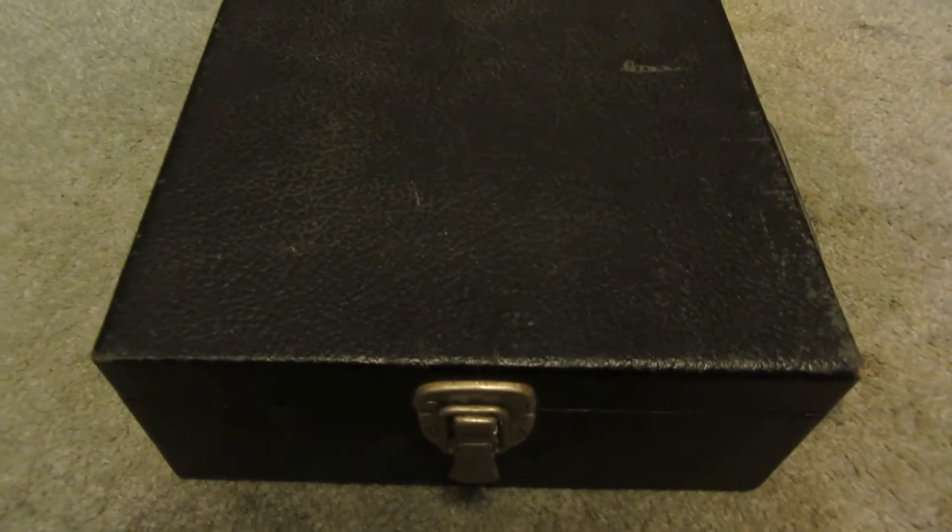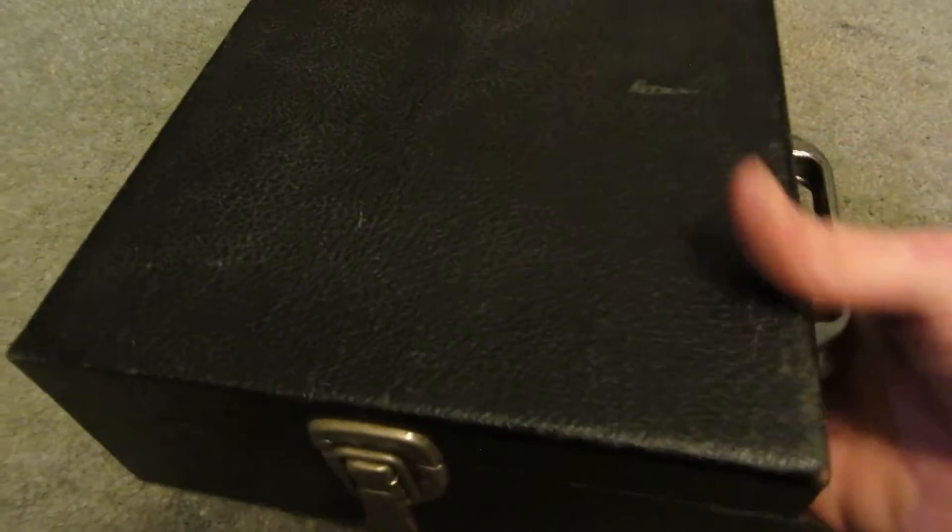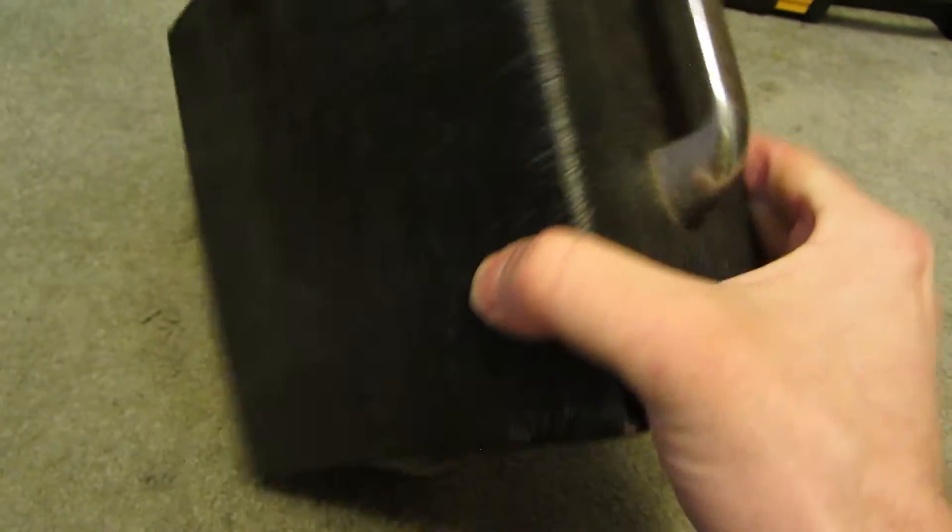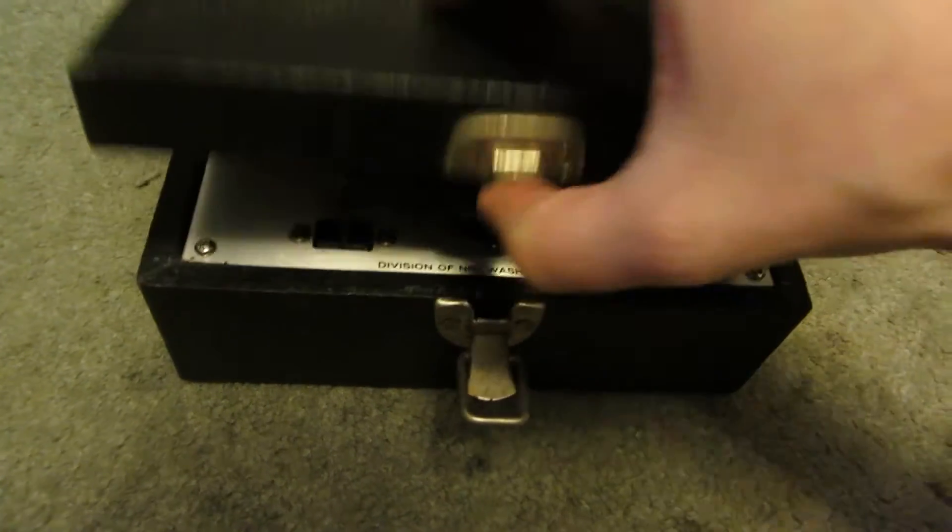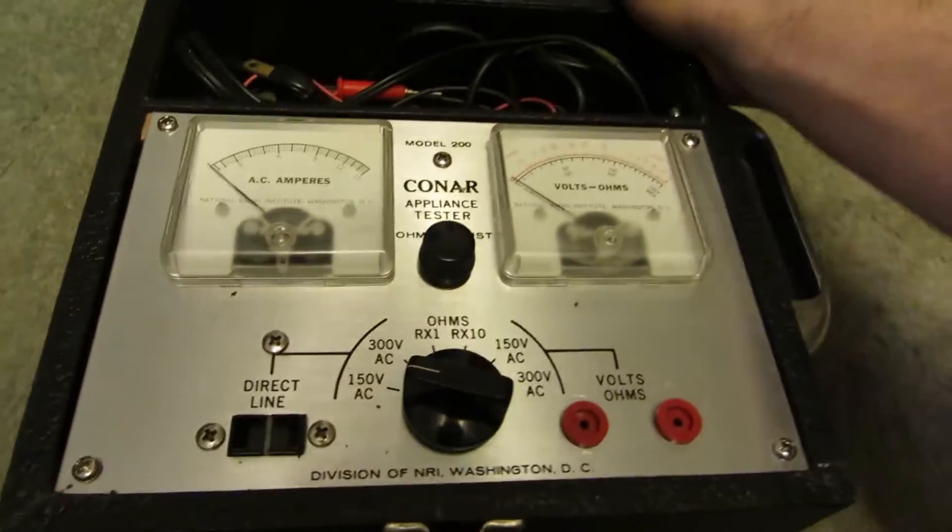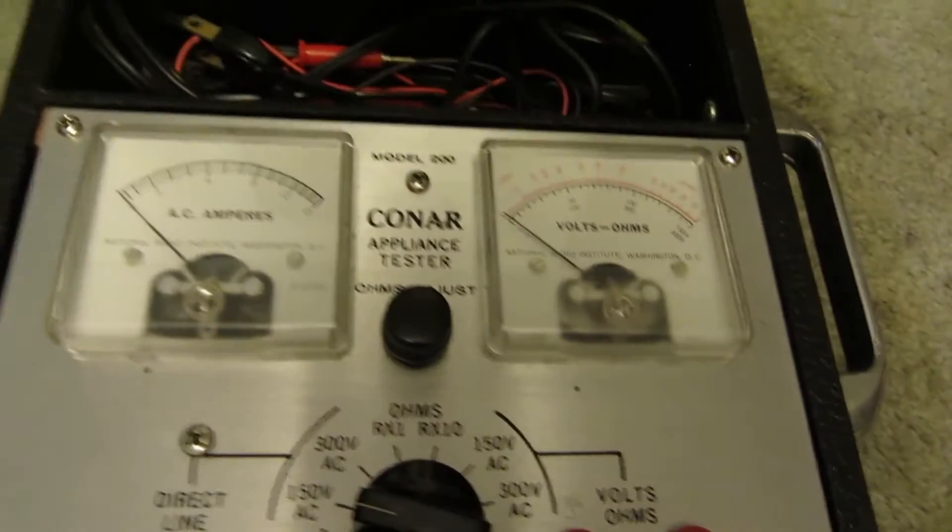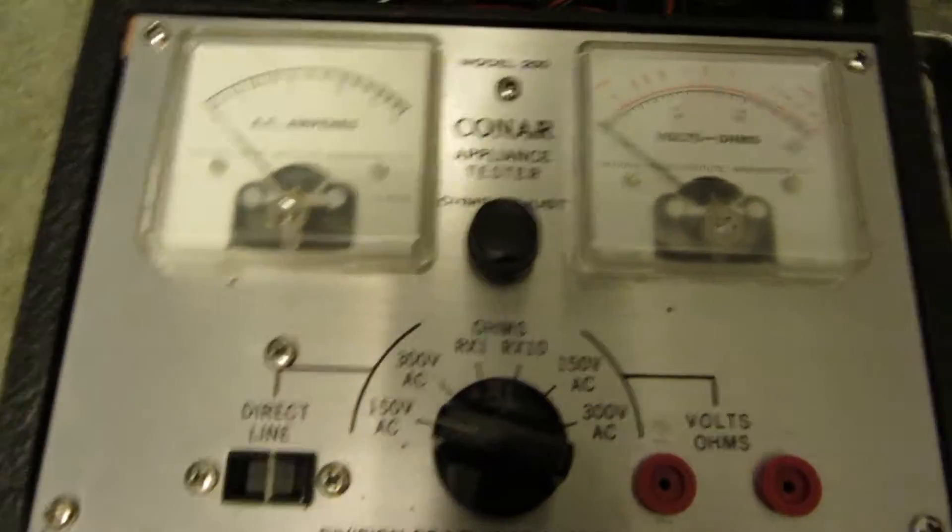Hello everybody, I got a little equipment autopsy today. I have a mysterious black box with no name or logo or anything on any of the sides. What it is, is a model 200 Conar Appliance Tester.